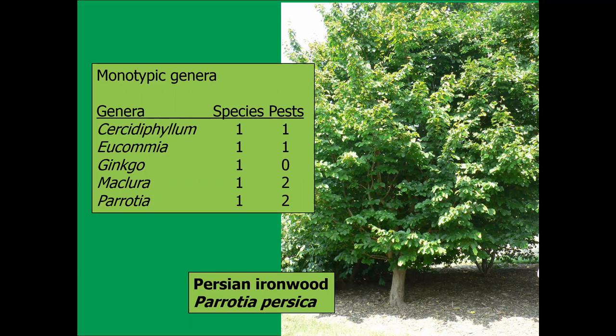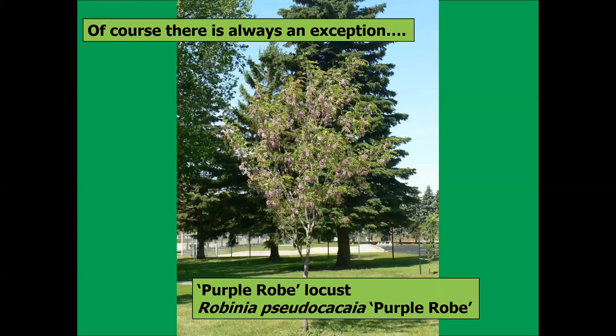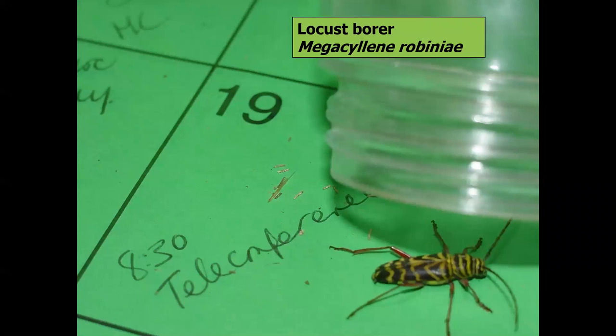Obviously this is a general rule, and there are exceptions. One is black locust. There are not a lot of Robinia species globally. Here's the purple-robe locust — a beautiful tree in spring with long chains of flowers. But as you can see in this picture, that's not a very old tree. Within about five years, they're killed by the locust borer. So again, here's an exception: relatively few species in this genus, but we do have a lethal pest in many areas.